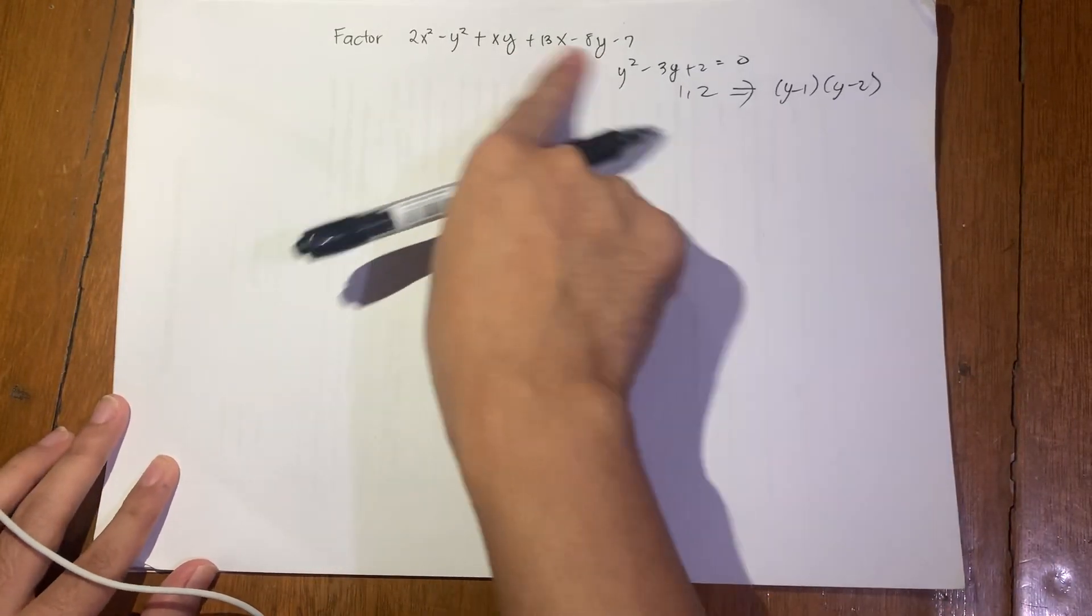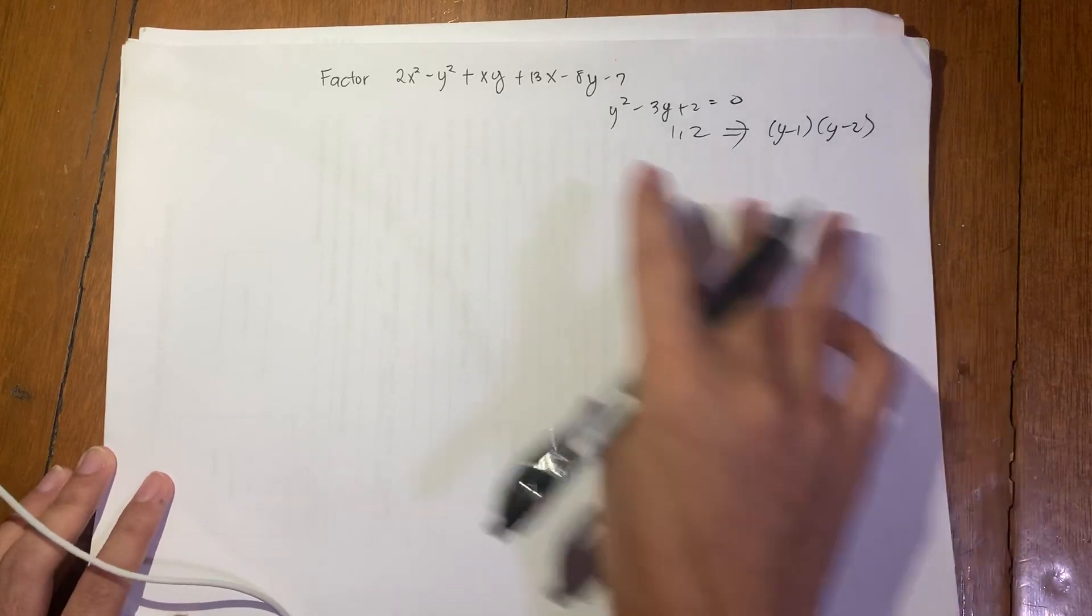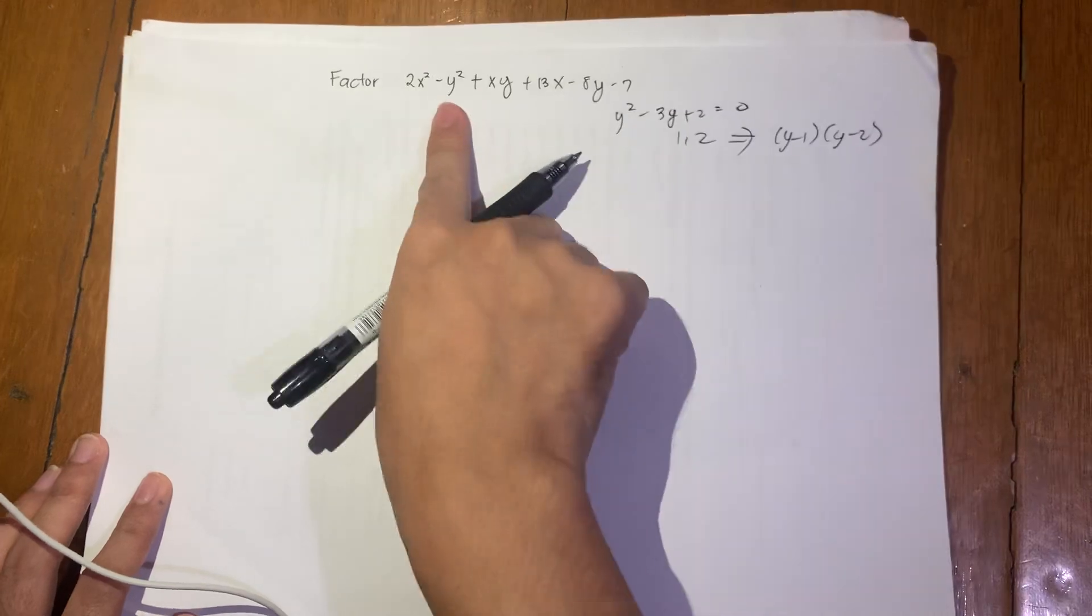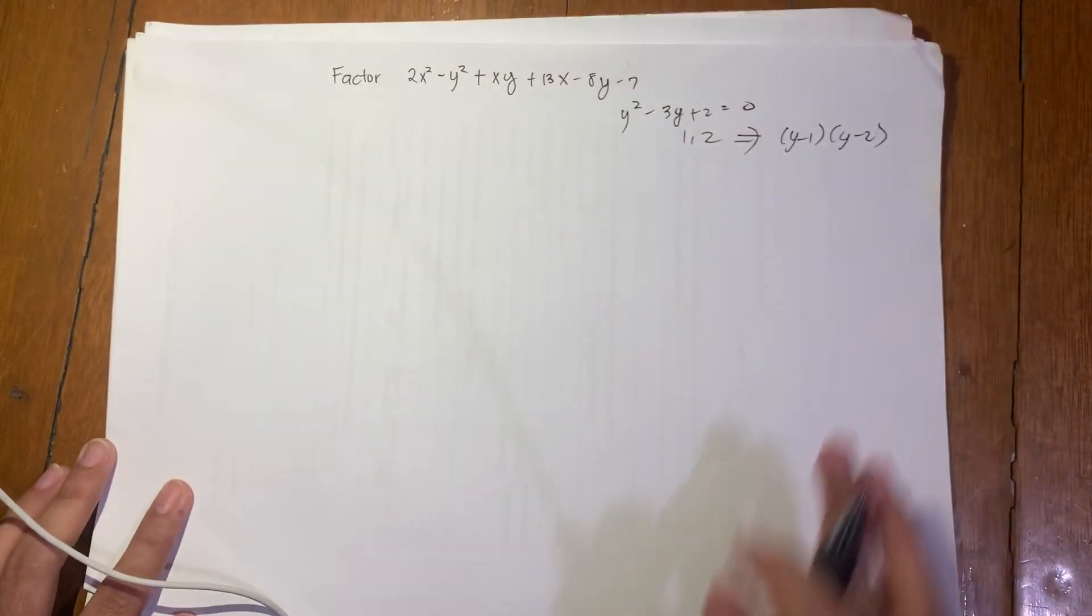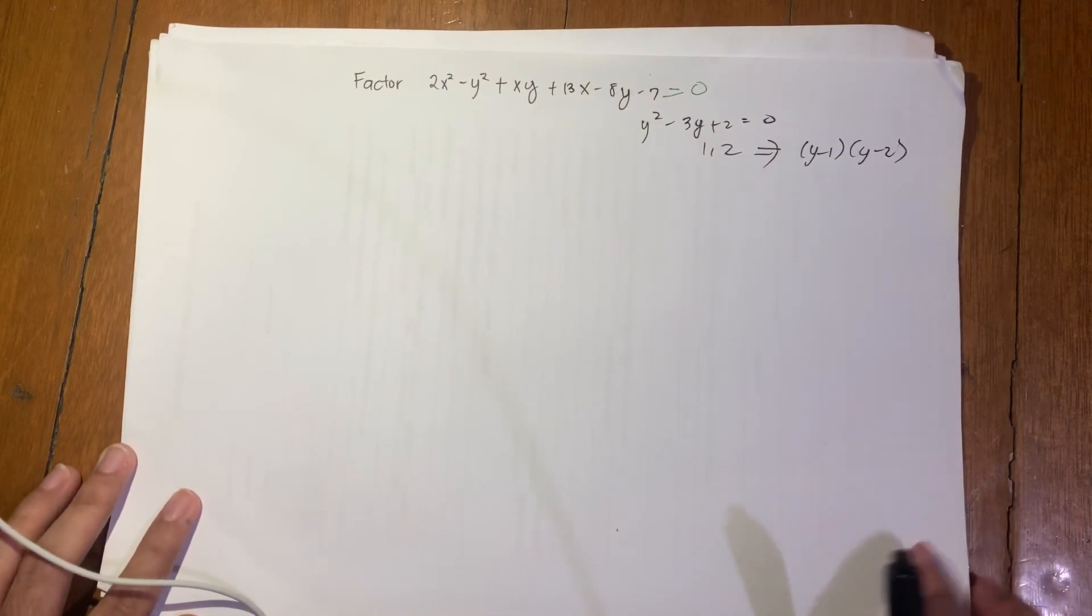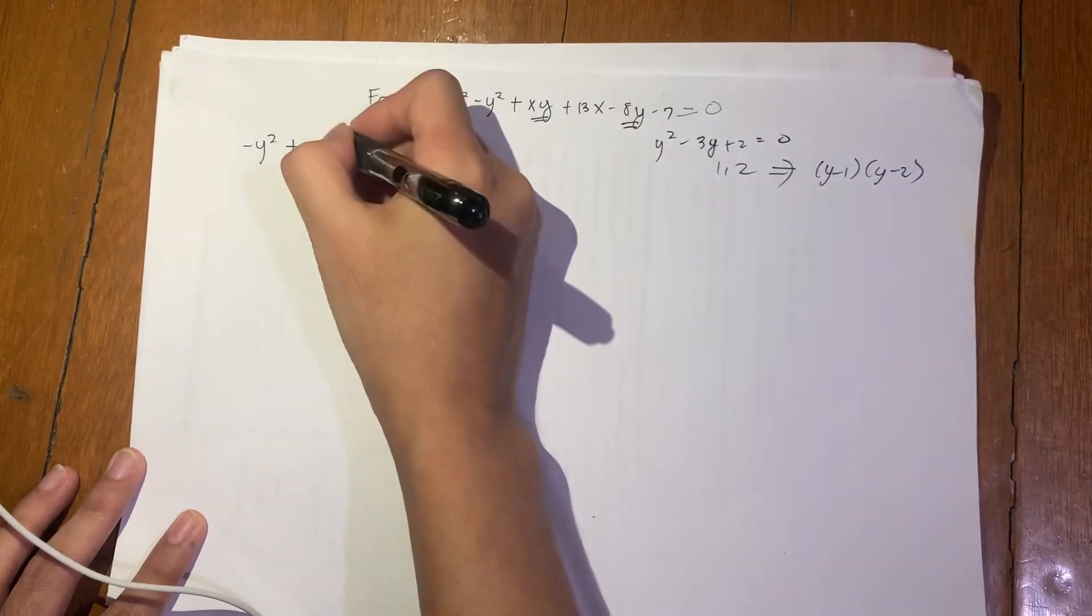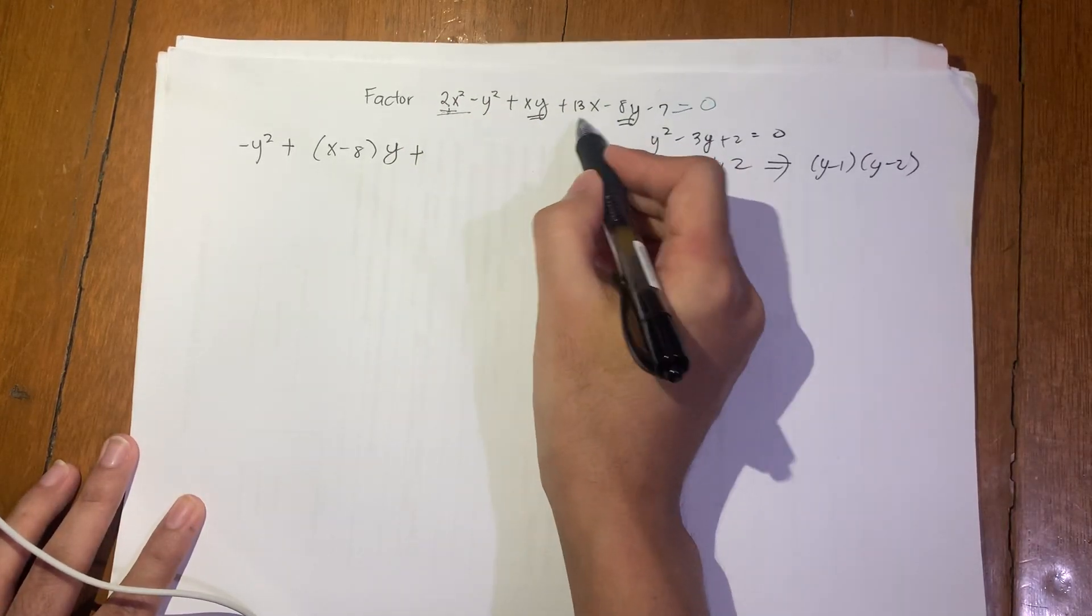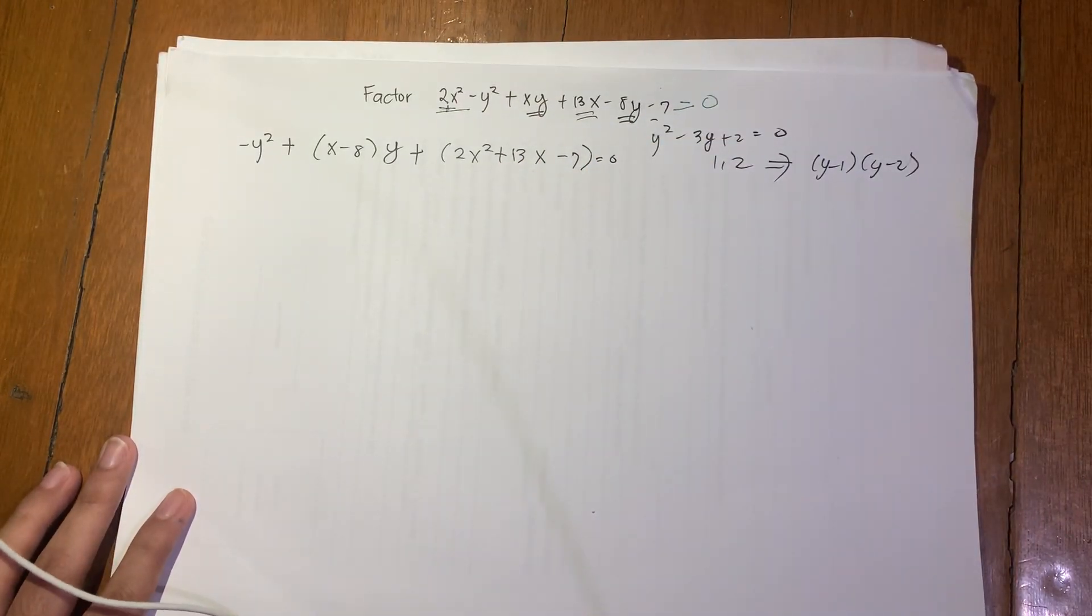So instead of thinking how to factor, I'll just think how to solve it, which is doable using quadratic formula. So what we'll do with this expression is treat it as if it's an equation, a quadratic equation in terms of a variable, and that variable I want is y. I'll favor y because the coefficient is smaller. I'll have this expression equated to 0. So rearranging: negative y squared plus (x - 8)y plus 2x squared plus 13x minus 7 equals 0.